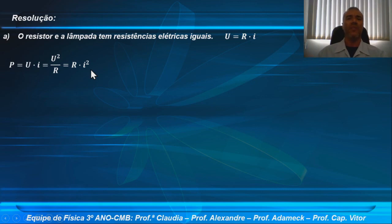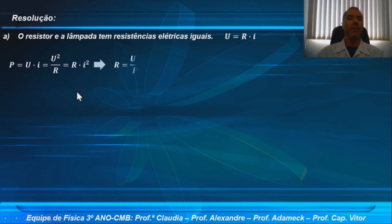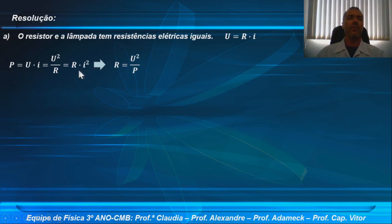Em se tratando de resistores ômicos, aplicando U igual a R vezes I e substituindo no lugar do U ou do I, podemos escrever outras relações para resistores ômicos. Se no lugar do I substituirmos U sobre R, encontramos que a potência consumida por um resistor ômico é igual a U ao quadrado sobre R. Também poderíamos substituir U por R vezes I, obtendo R vezes I ao quadrado. Isso se relaciona ao efeito Joule: o resistor transforma energia elétrica em energia térmica pela colisão dos elétrons com os átomos do condutor.